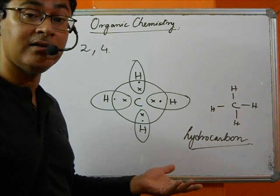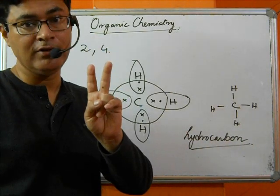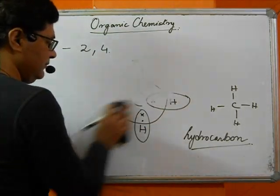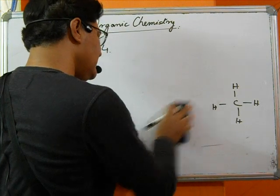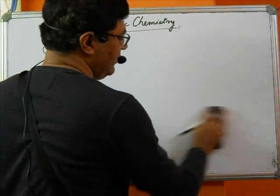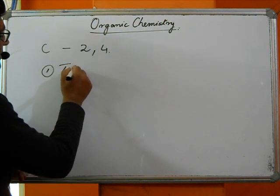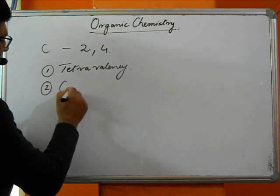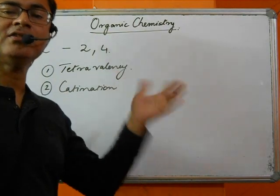What makes carbon so unique? There are two specific properties which make carbon very unique. Number one: tetravalency. Number two: catenation. These two properties — tetravalency and catenation — make carbon extremely special.